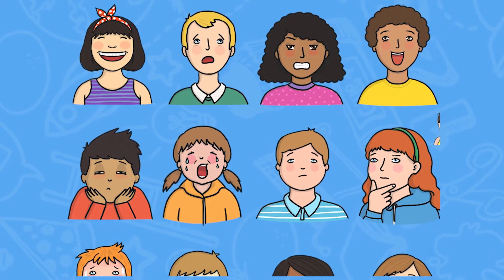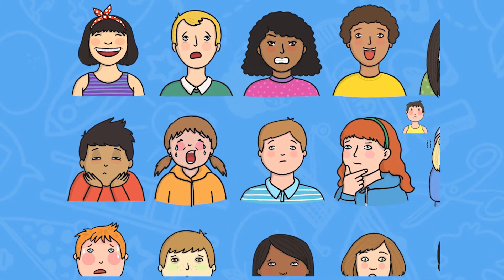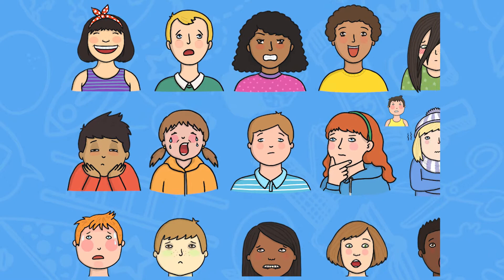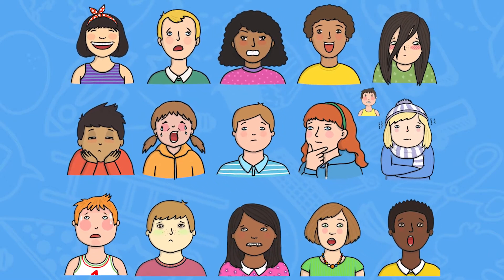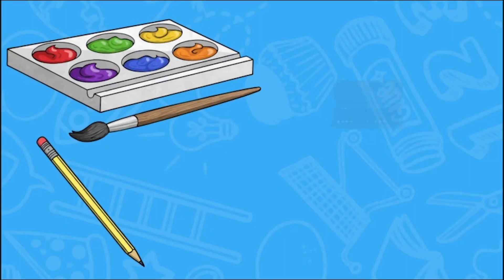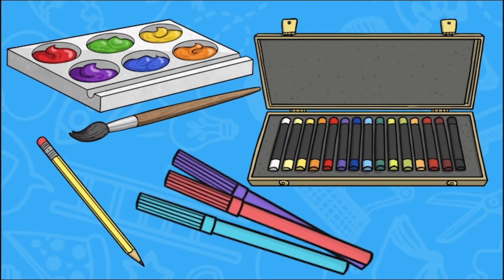For this activity, children will have to think of different emotions and choose one that they think would make a good subject for a piece of artwork. Then they can choose their medium — for example, paint, pencils, pastels, felt tips, etc. Perhaps you can encourage them to choose a particular medium that you have been studying this term.